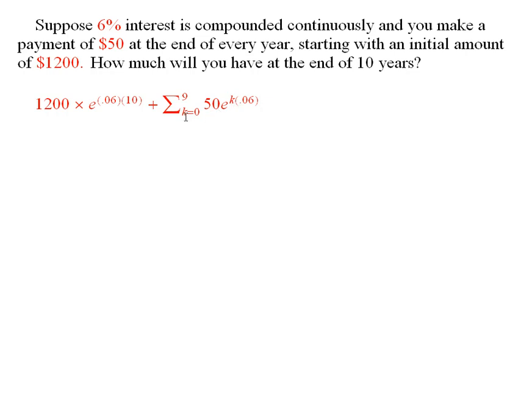The payment before that one sits in the bank, or whatever is giving you this interest, for a period of one year, and so you'd have 50 times e to the 1 times .06, and so on down to the payment that was made at the end of the first year, which sits in the bank for 9 years. And so you'd have an e to the 9 times .06 times 50 for that one.